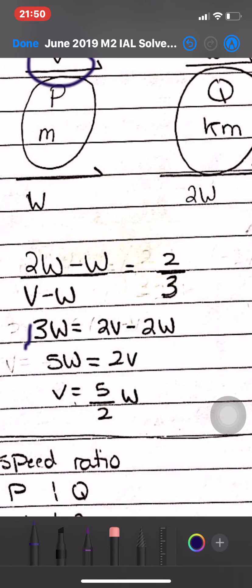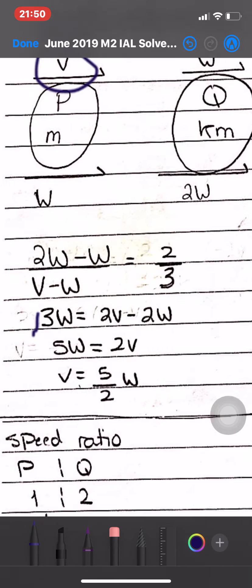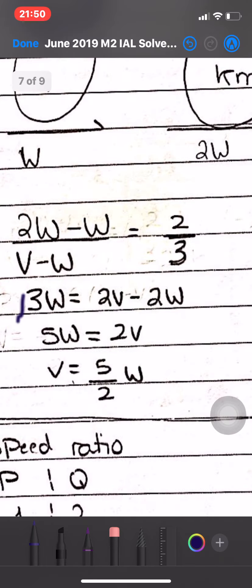So 3W equals 2V minus 2W, which equals 5W equals 2V, so V equals 5 over 2 W.